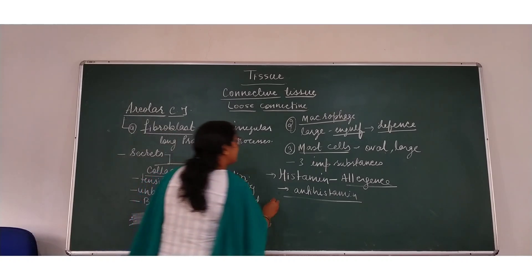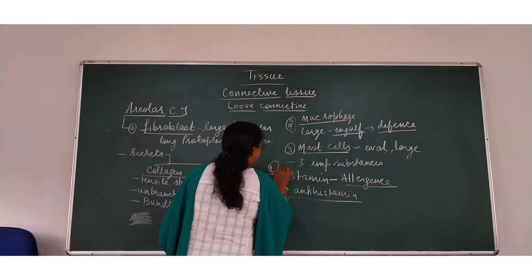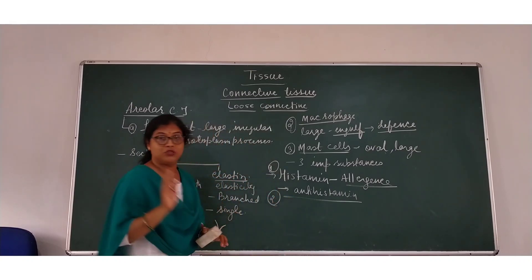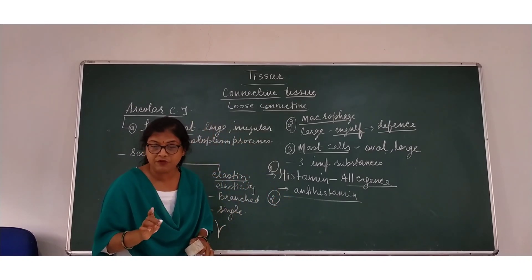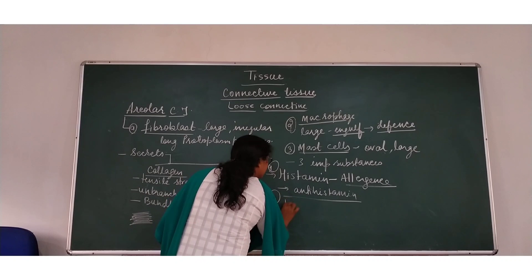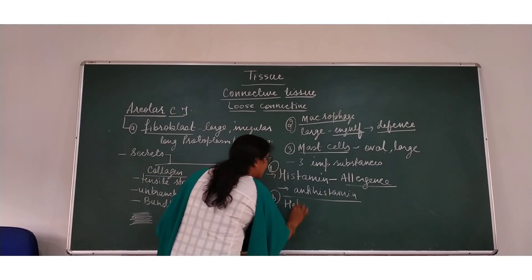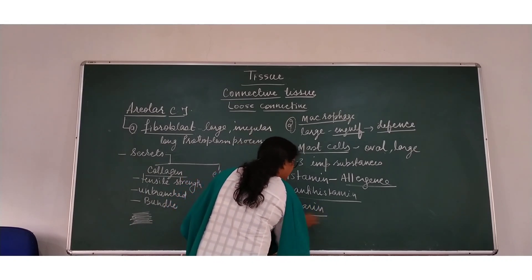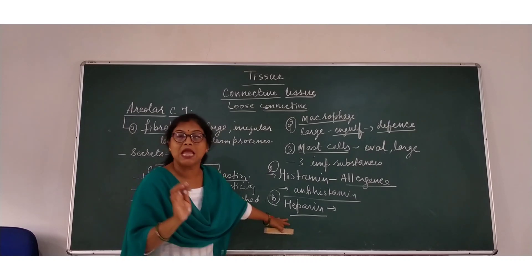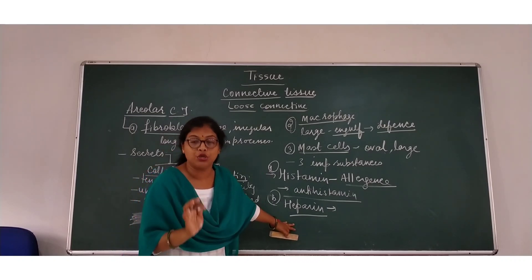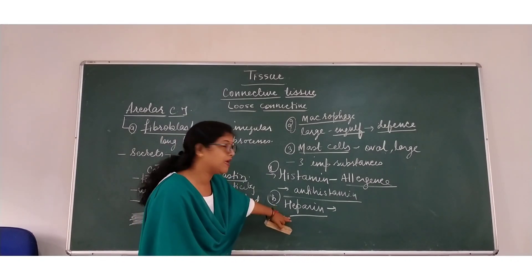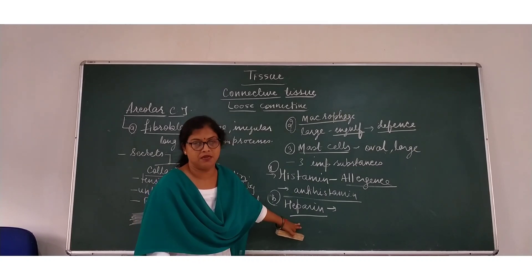The second important substance secreted by mast cells is heparin. Heparin is known as an anti-coagulant — it prevents the coagulation of blood.